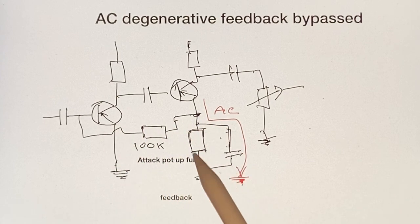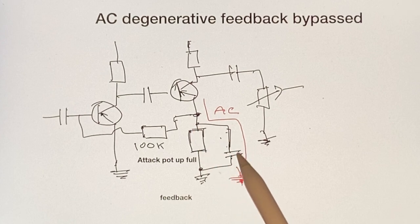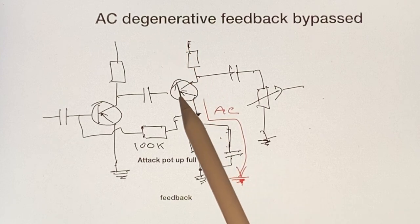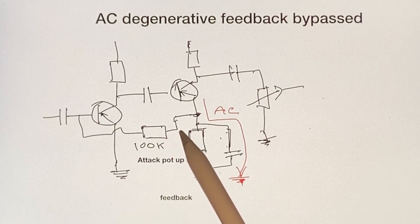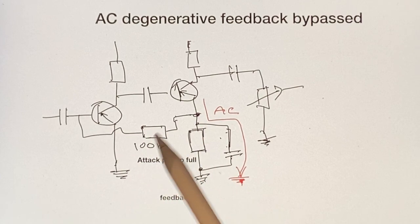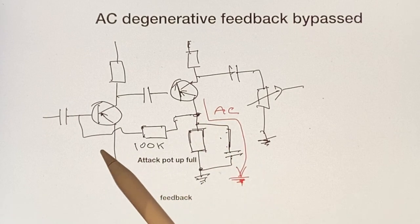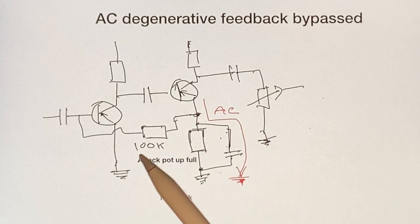This is one of the reasons why when you've got the attack up, it's not only bypassing the AC here and reducing the degenerative feedback across here, it is also reducing the amount of AC feedback through here. So the negative feedback through this resistor is reduced. There's quite a lot going on here.